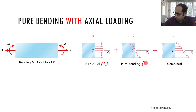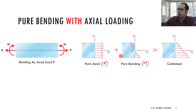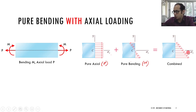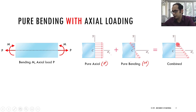This is essentially the method of superposition — you take the moment and look at it separately, take the axial load and look at it separately, and once you combine them you get the joint stress distribution. Since the load P applied here was tensile, the tensile arrows have increased in length and the compressive arrows have decreased in length.